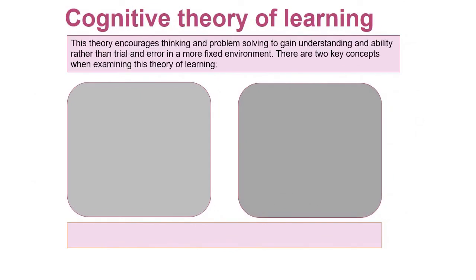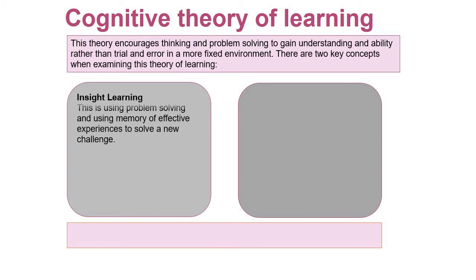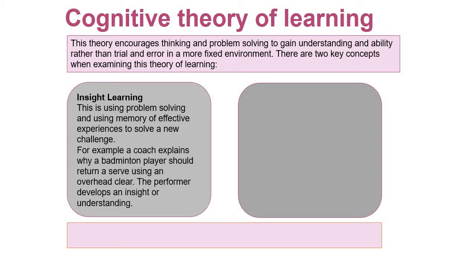This theory encourages thinking and problem solving to gain understanding and ability, rather than the trial and error from operant conditioning. Two key concepts: first, insight learning - using problem solving and memory of effective experiences to solve a new challenge. In a sporting context, a coach explains why a badminton player should return a serve using an overhead clear, and the performer starts to develop an insight and understanding of why they're doing it - not just doing it for the response, but thinking of the actual reason behind it.